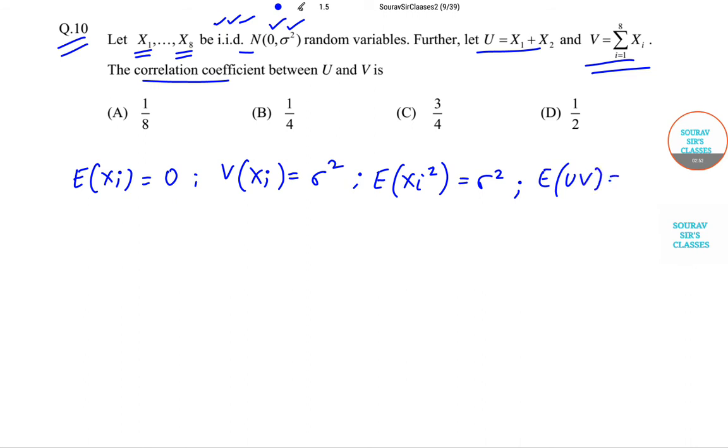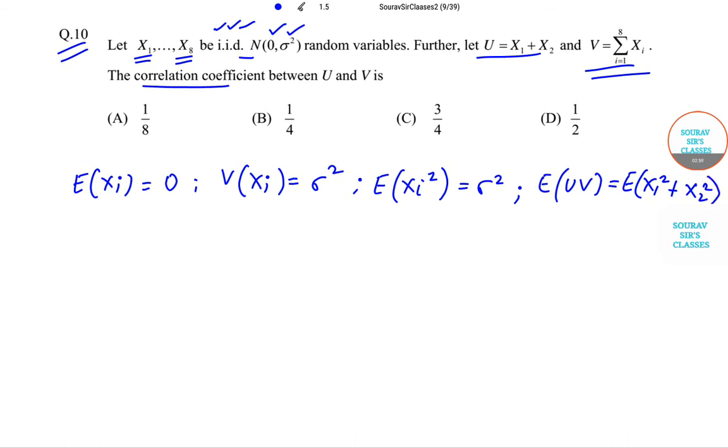Now the expectation of Xᵢ² will be σ². And expectation of UV will be written as E(X₁² + X₂²), and this is equal to 2σ².